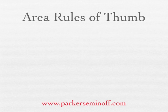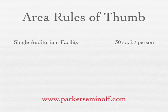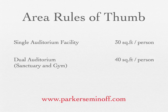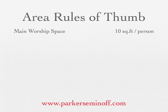These are rough guidelines only for planning purposes — actual building area will vary with the layout. Overall, if you're building a single auditorium facility, you'll need an average of about 30 square feet per seat. If it's a dual auditorium facility — that is, a sanctuary and a gymnasium — you'll need about 40 square feet per person. The main worship space will need about 10 square feet per person, including the platform.